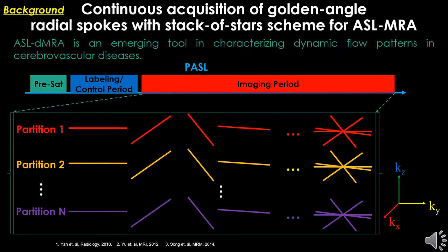Label and control ASL data was sampled using a golden-angle radial trajectory with a stack-of-stars partition-by-partition manner.